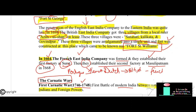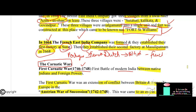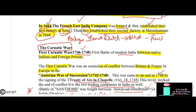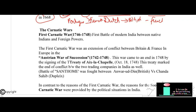In 1664, the French East India Company was formed. They established their first factory at Surat, then a second factory at Masulipatnam in 1668. The French were seen as rivals to the British, and conflict arose between the two. In chronological order: first came the Portuguese, then the Dutch, then the British, and then the French.